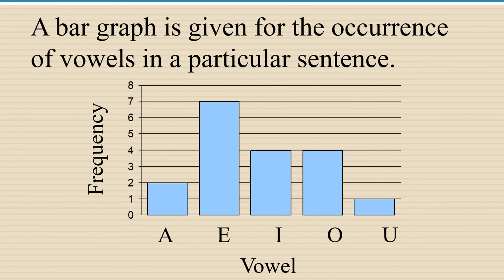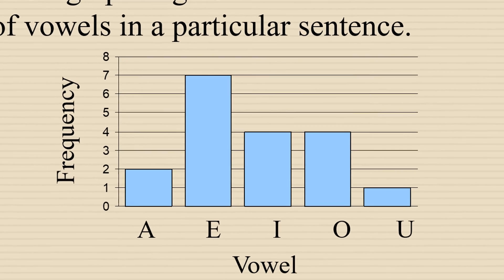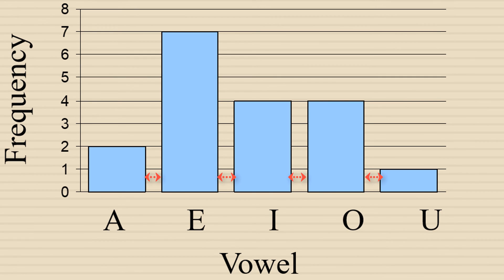Here is a bar graph that represents the number of vowels in a particular sentence. This sentence had two A's, seven E's, four I's, four O's, and one U. The reason that the rectangles are not adjacent to each other, that there's a space in between, is because A, E, I, O, and U are not a span of values like numerical values.